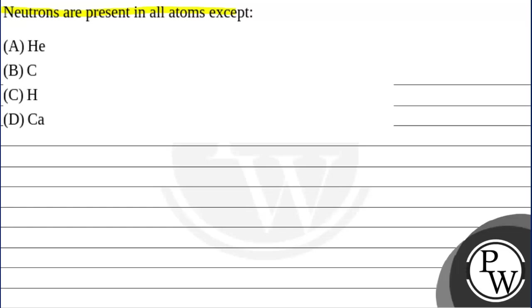Basically, we will determine which atoms have neutrons present in all atoms. So, first of all, the key concept here is that if we have to calculate number of neutrons, the formula for that is atomic mass minus atomic number. Or in other words, we can say mass number minus atomic number.